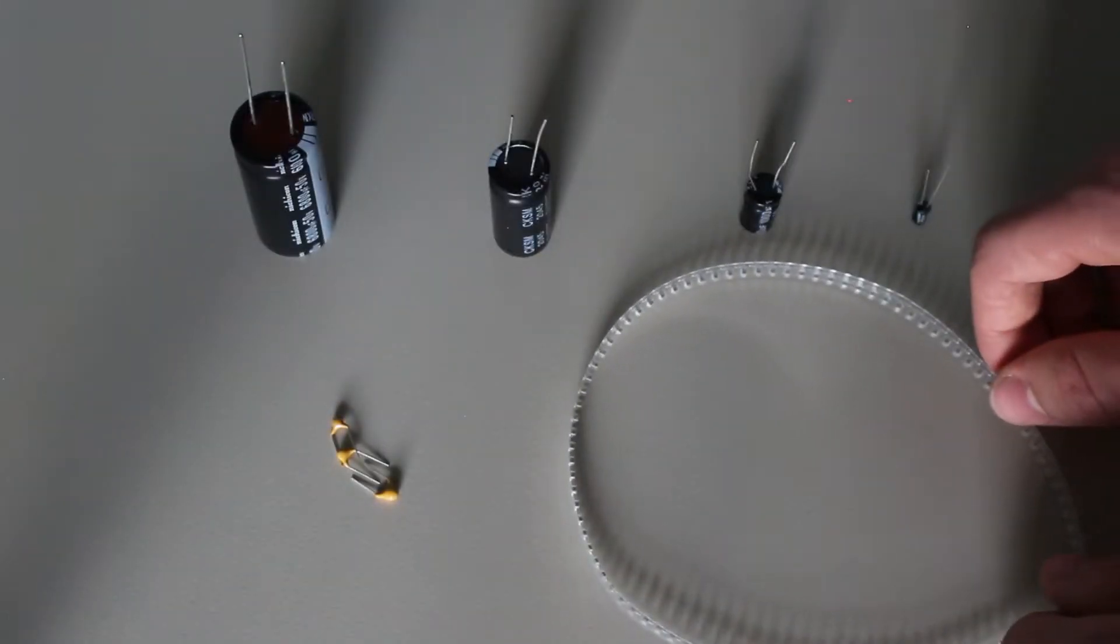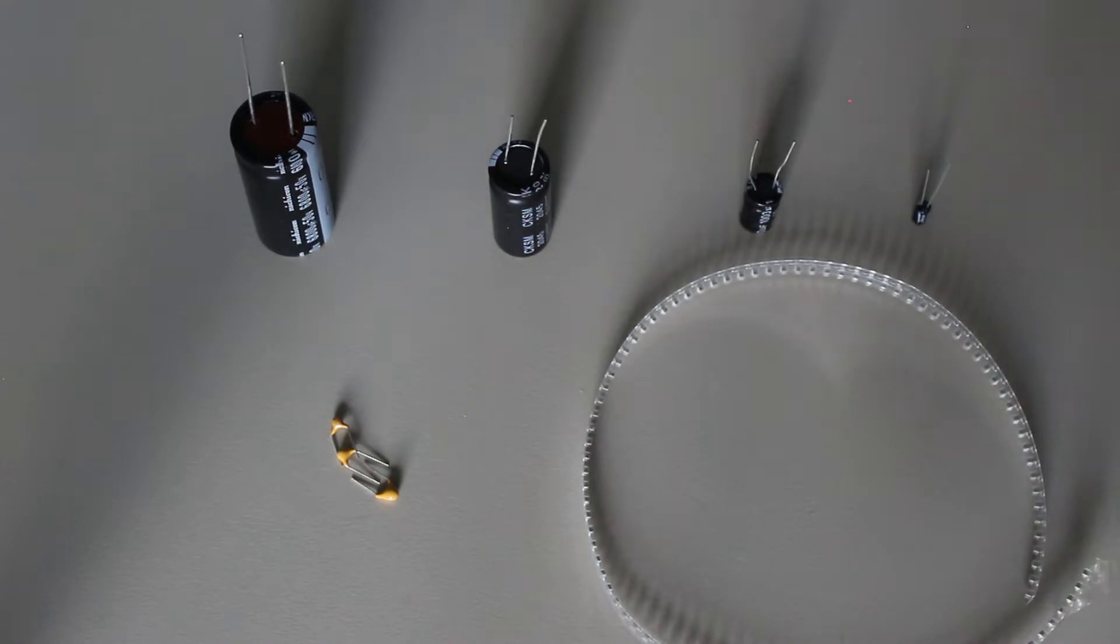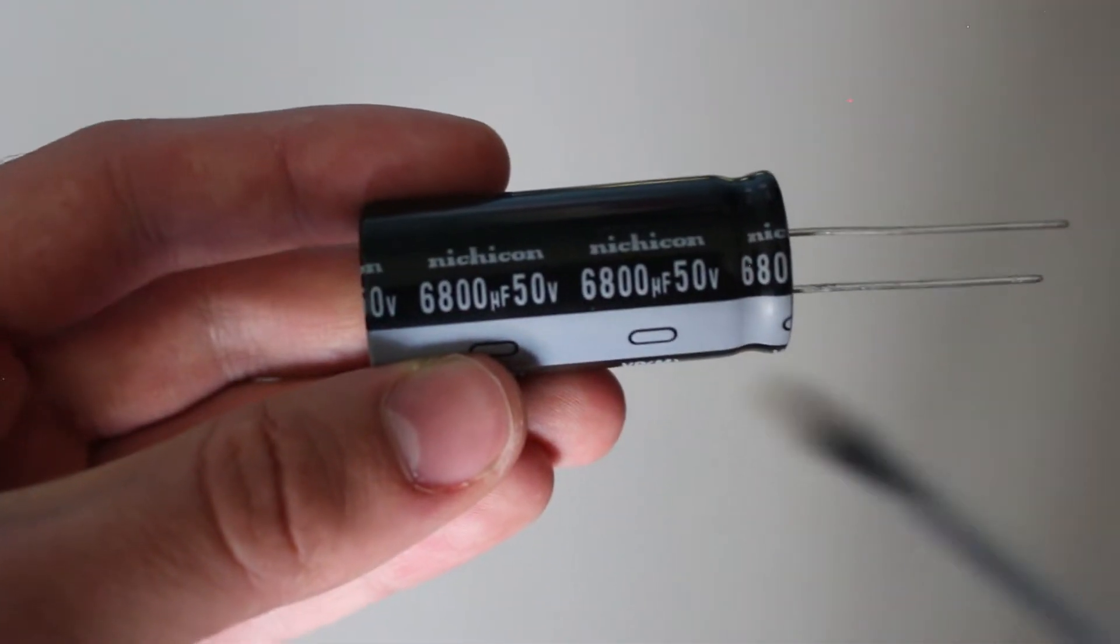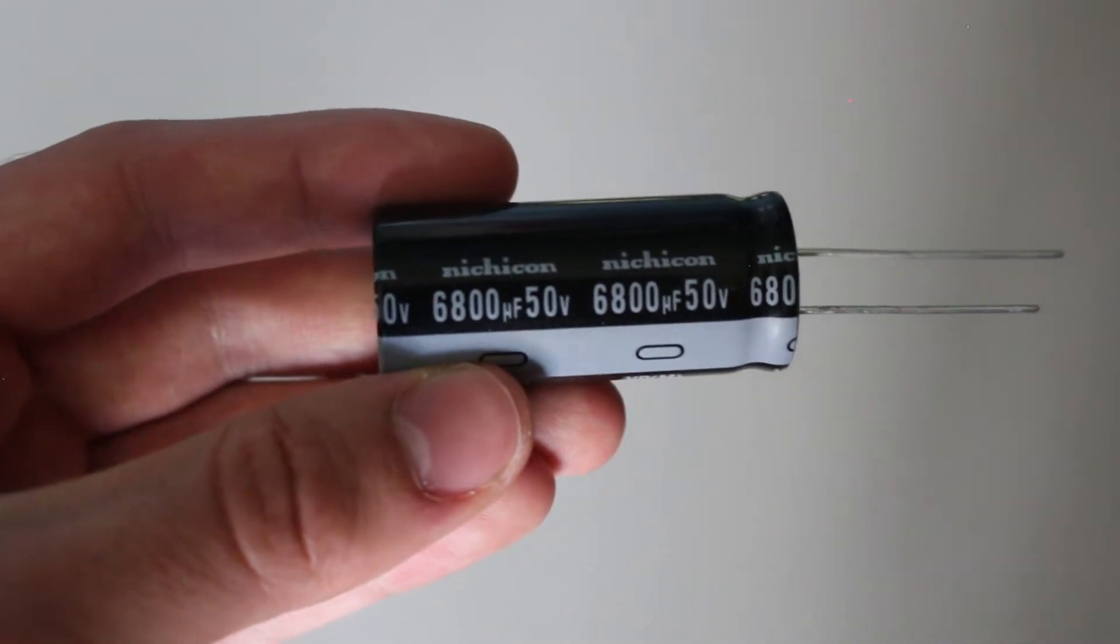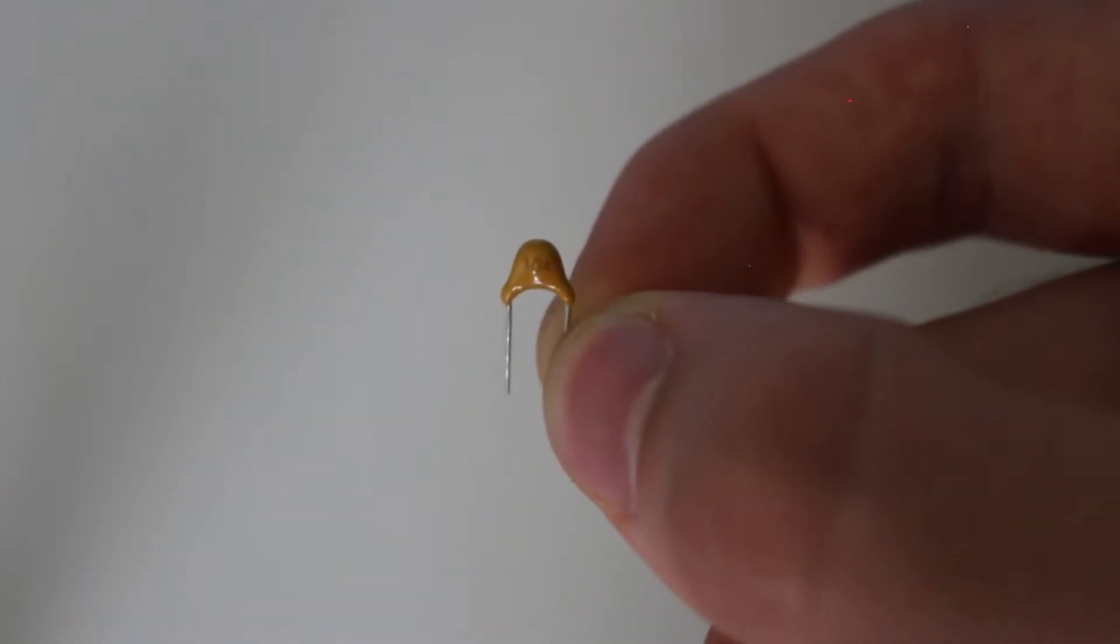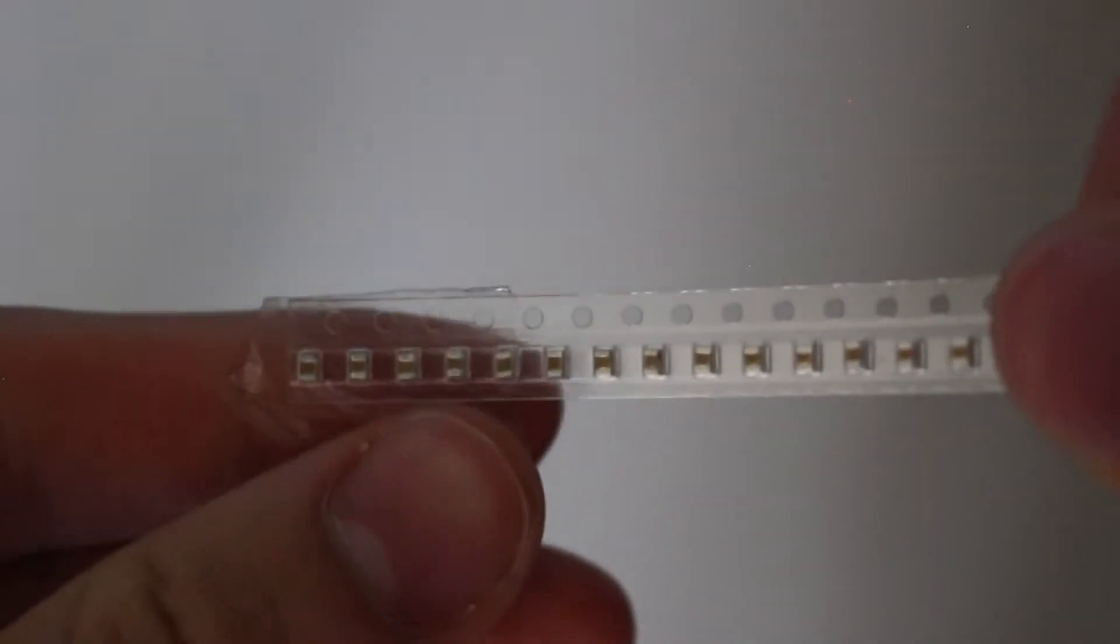Capacitors are some of the most common electronic components, and quite often you'll have to find the values of these capacitors. For some of them it is quite easy, like in these large electrolytic capacitors. But for other capacitors, you'll have to spend some time looking at them. Sometimes you may even be unlucky and have one that doesn't have any markings left.